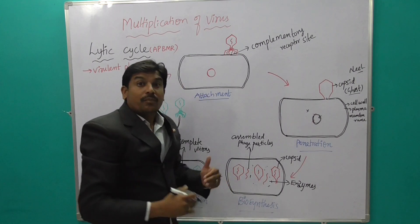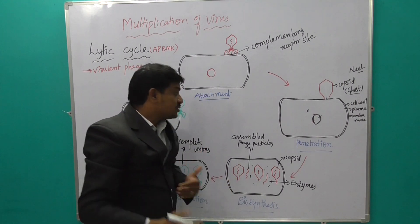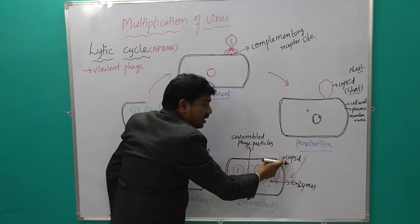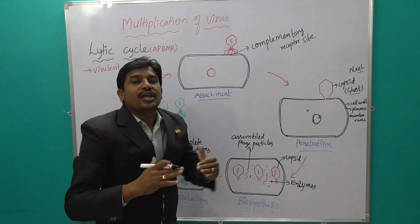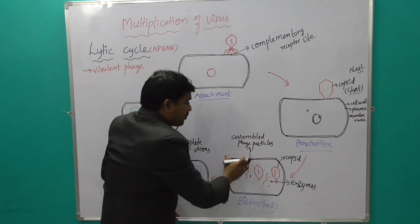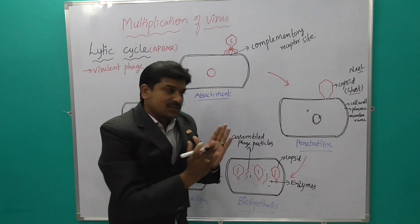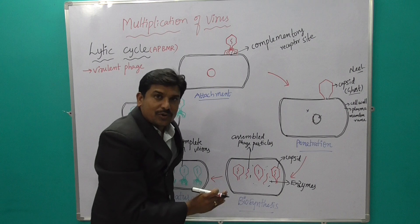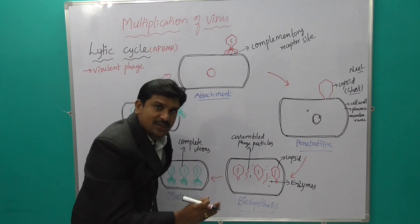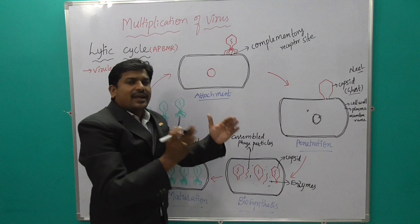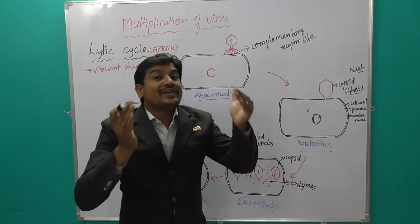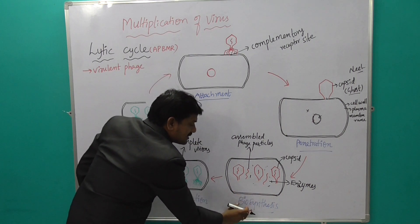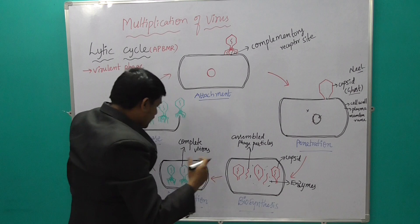The next stage is Biosynthesis. The phage DNA slowly replicates and multiplies, producing a large number of phage particles, capsids, and enzymes within the E. coli bacteria. Different components are produced — capsids, tails, tail fibers, and DNA — all assembled parts are produced within the E. coli bacteria. This process is called biosynthesis.